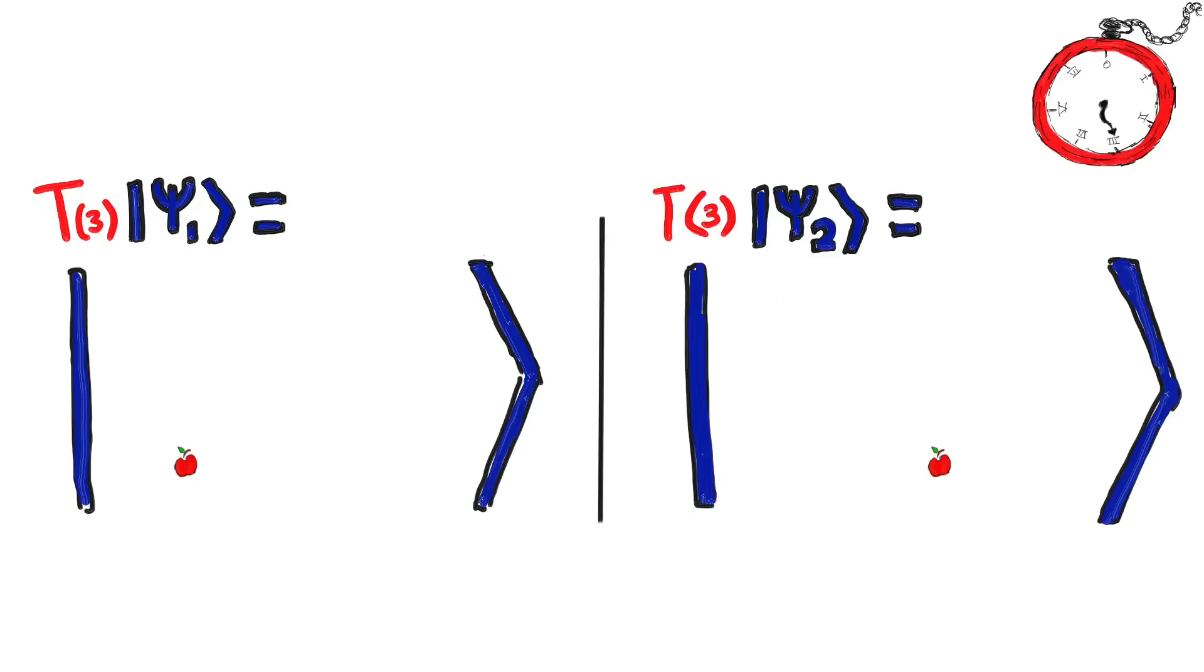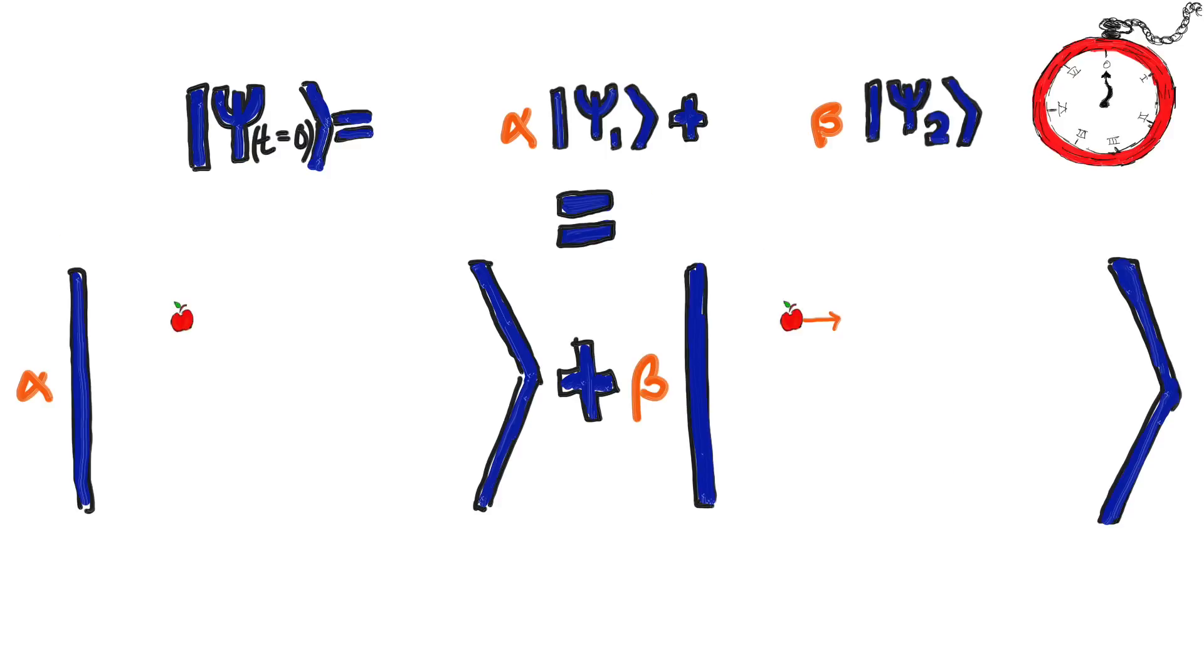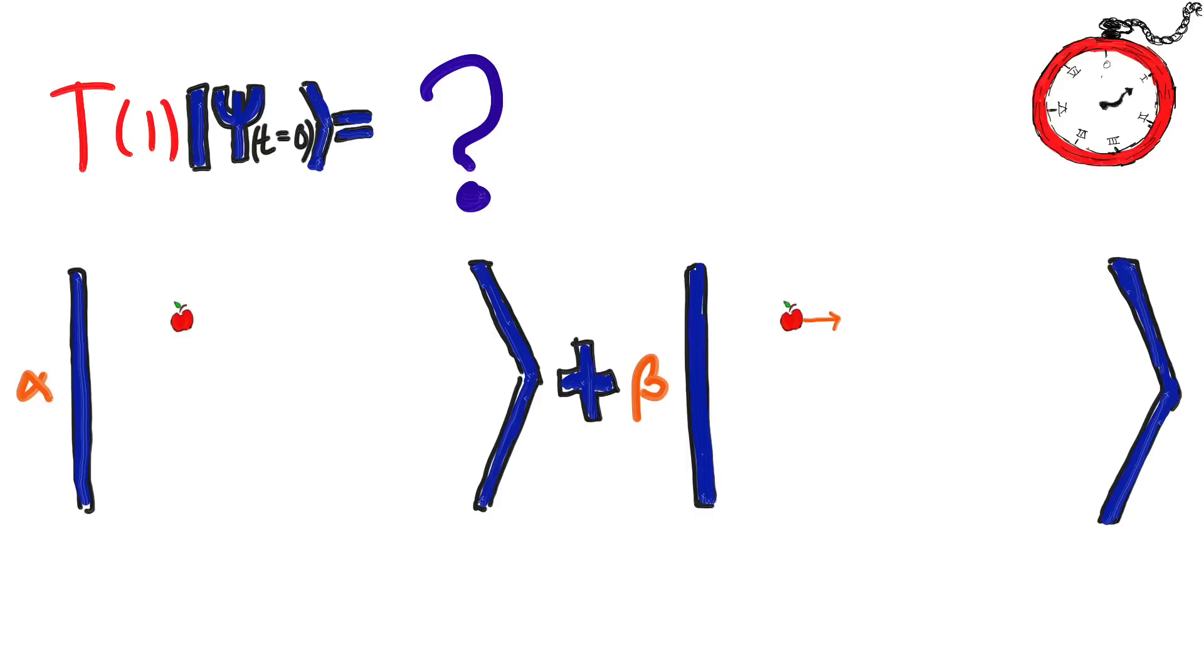But now suppose my object didn't start in one of these two states, but actually a superposition of both. In this case it both had no velocity and a big velocity to start. So what happens to it over time? What do you expect happens? Think about it.